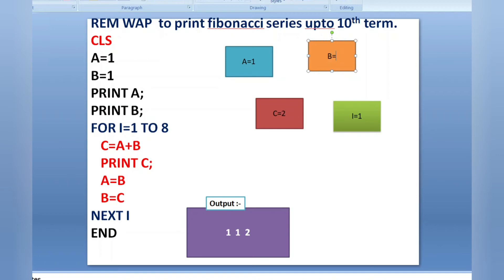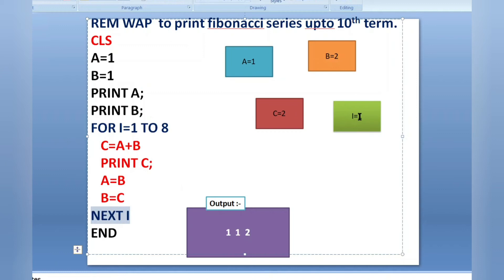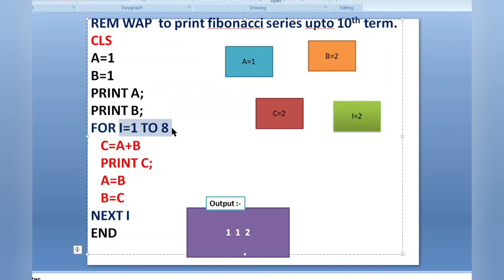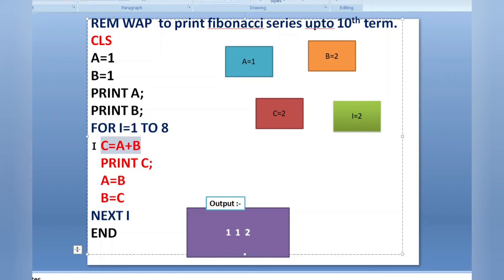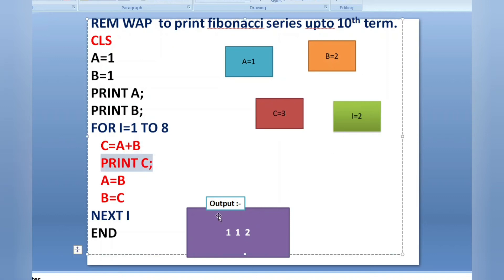Then B equals C, putting 2 into B. Now A is 1 and B is 2 — those are the last two values. Then I is incremented to 2, we go back to the loop, condition is true. C equals A plus B: 1 plus 2 is 3. Print C — 3 is printed.